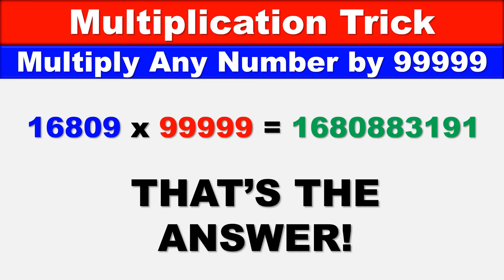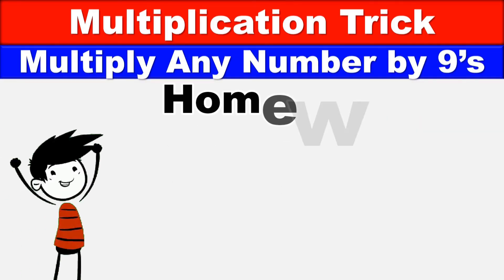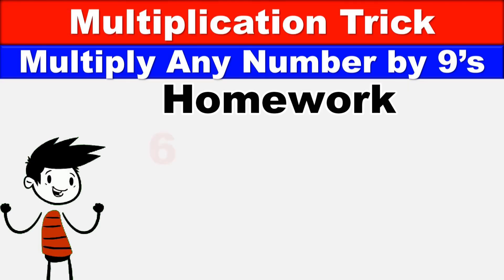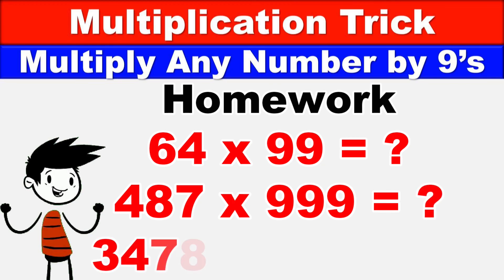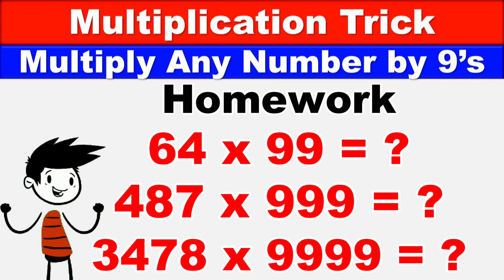Try to figure out what 64 times 99 is, what 487 times 999 is, and what 3,478 times 9,999 is. Make sure to comment your answers in the comment section below. For your convenience, the answers to each of these homework questions are in the description below. Thanks so much for watching. Love you! - Akash